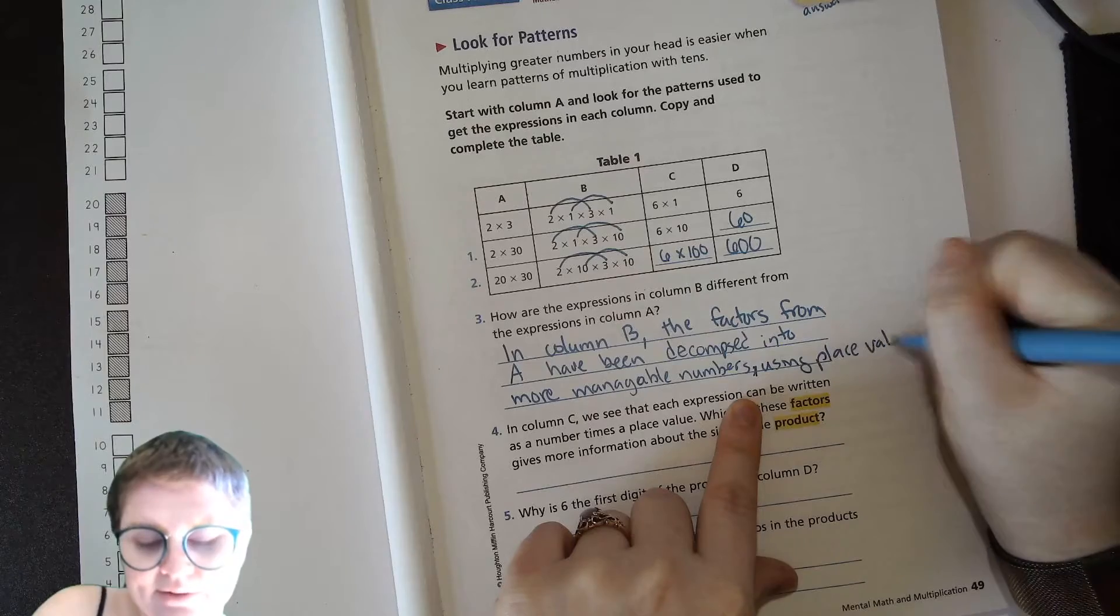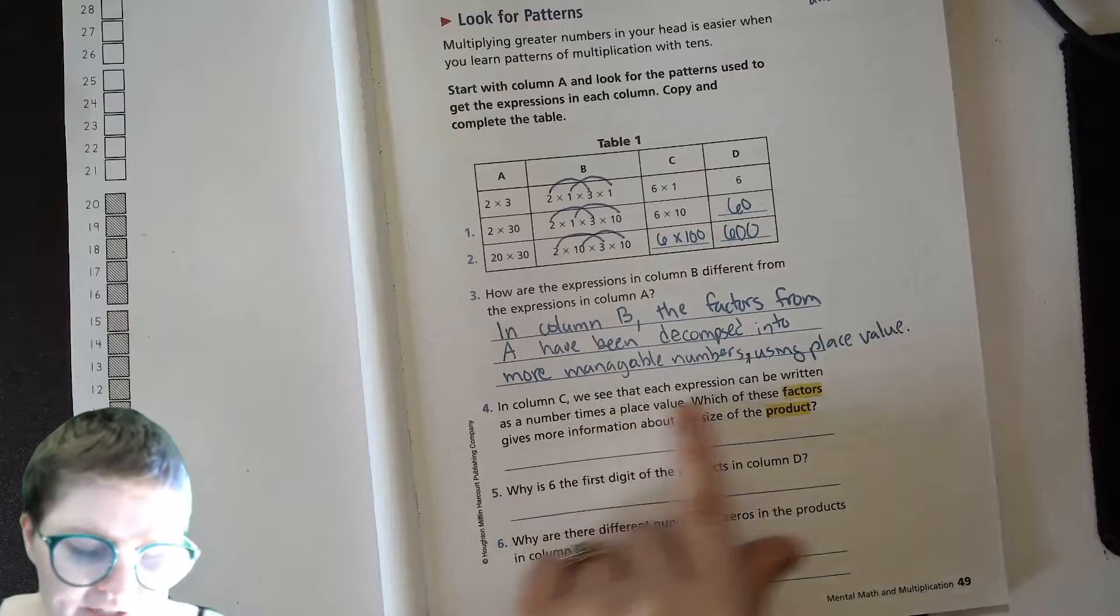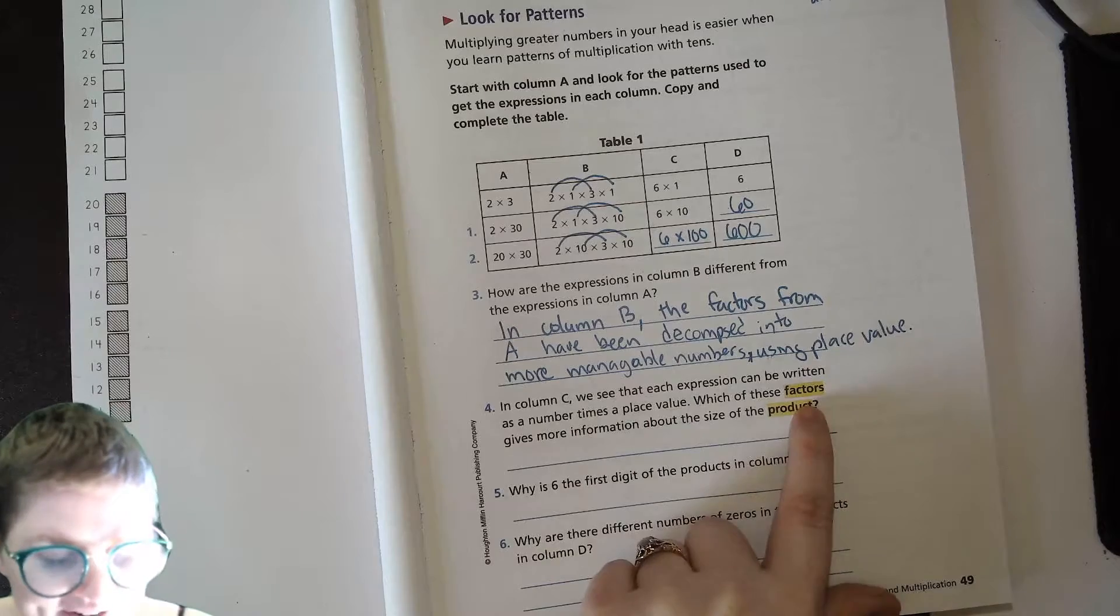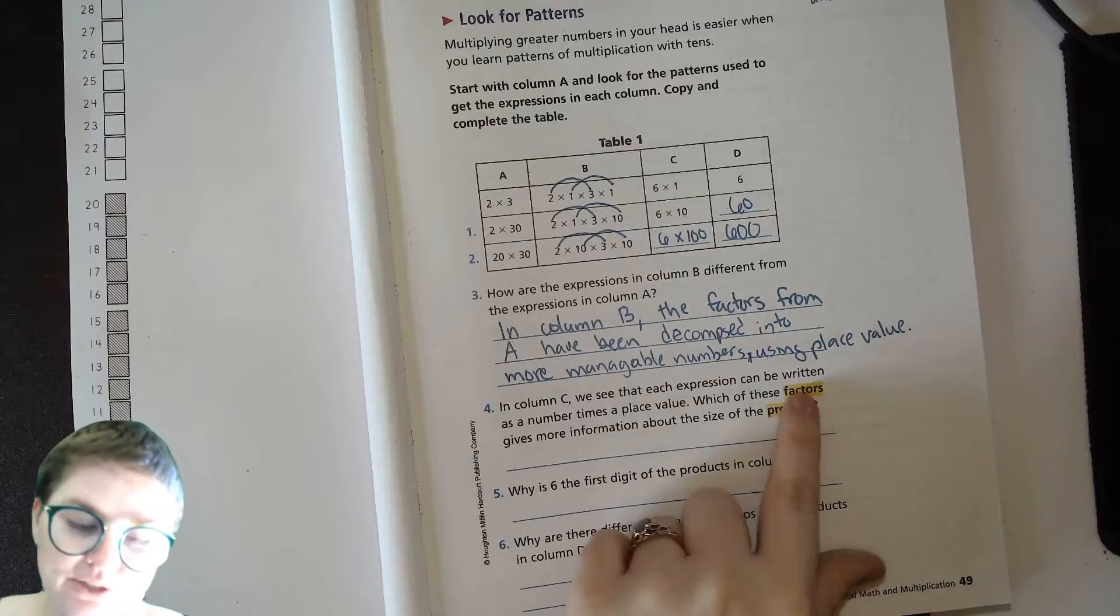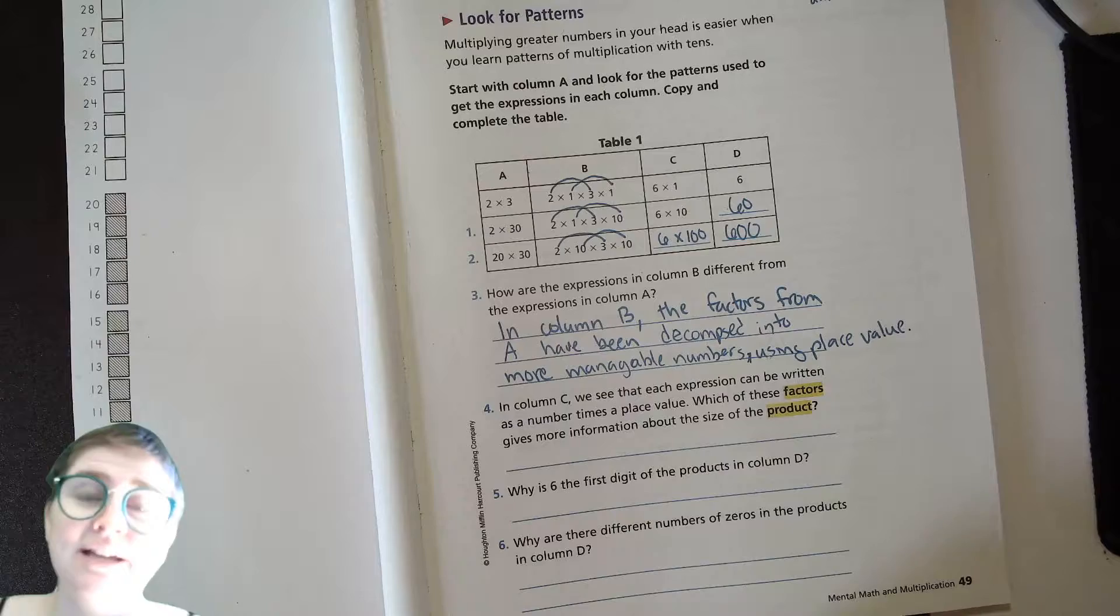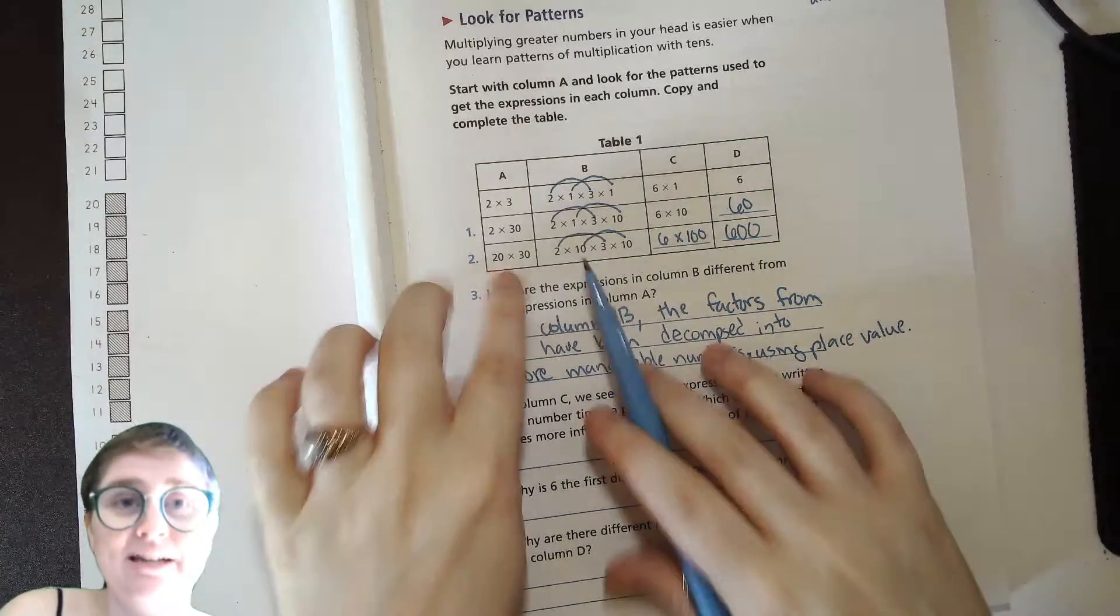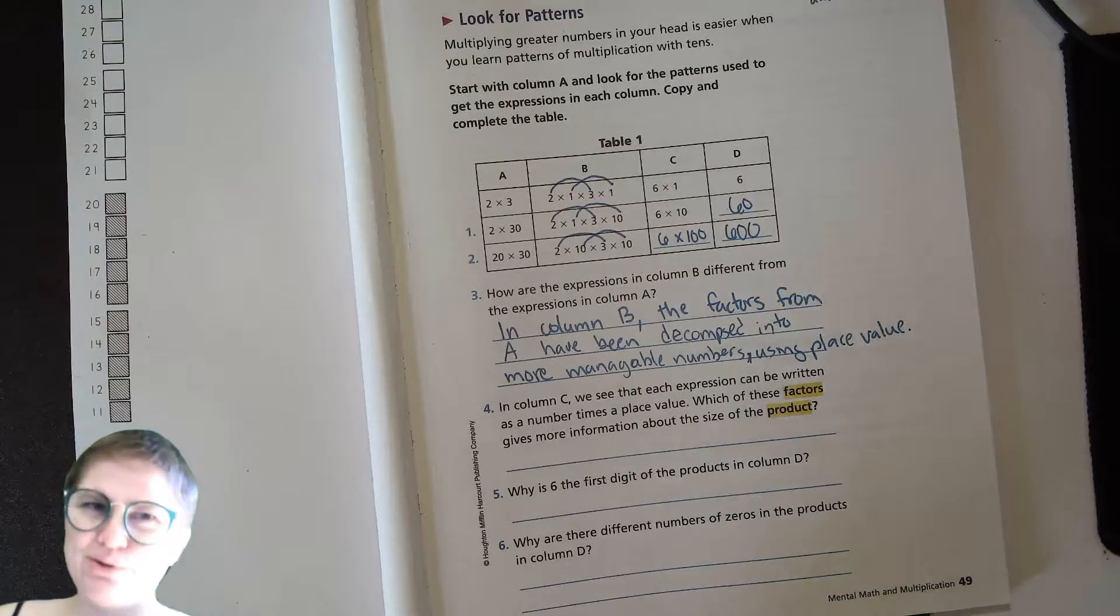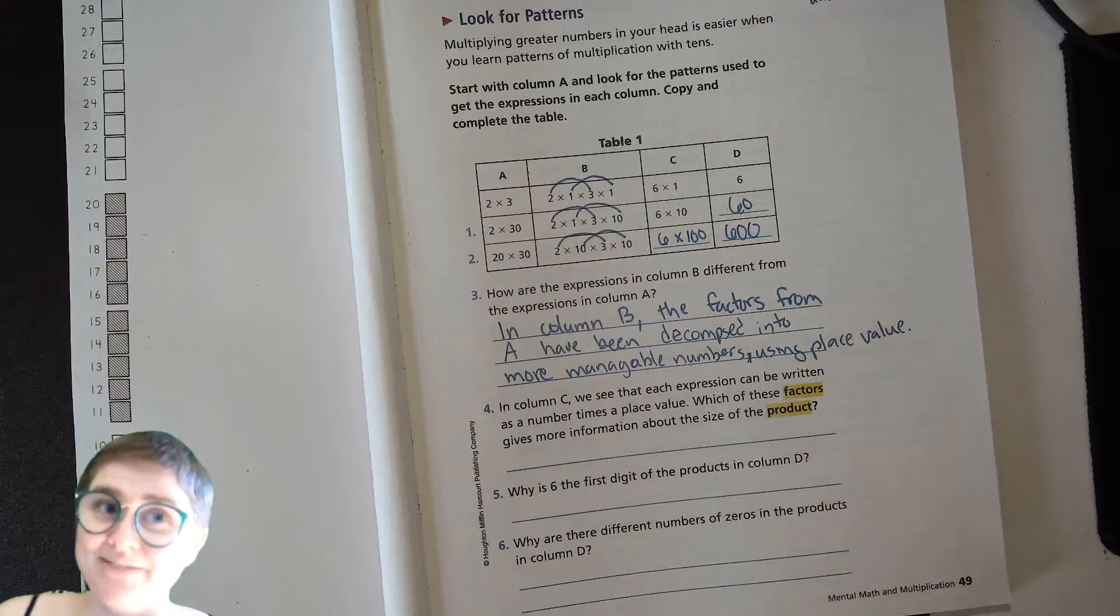In column C we see that each expression can be written as a number times a place value. Which of these factors gives more information about the size of the product? Now which of these gives more information about the size of the product or the answer? Is it the digit that was like the beginnings that you're multiplying by the place value, or is it the place value itself? What do you think? It's the place value, it's the place value, right?